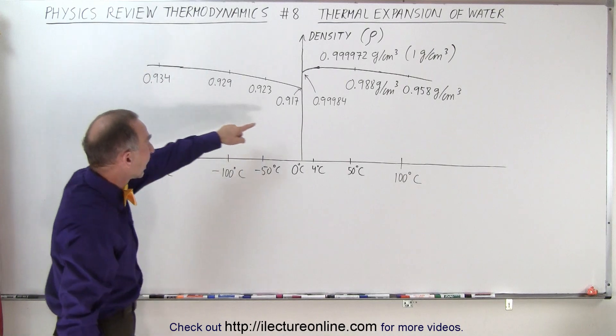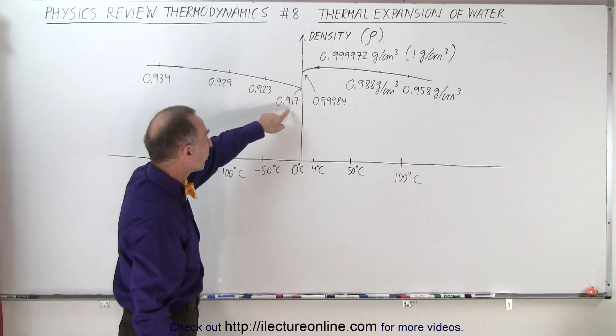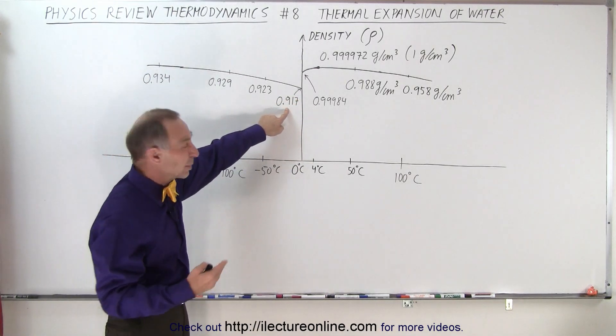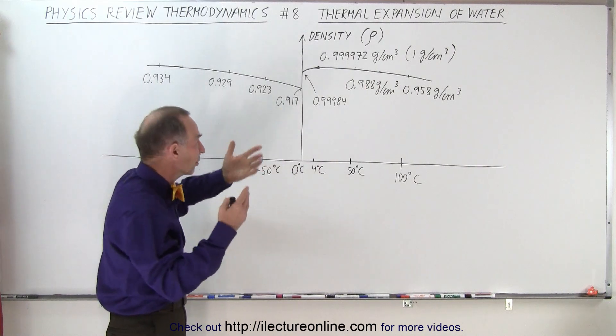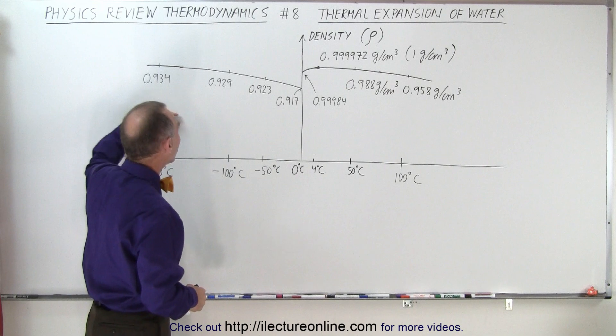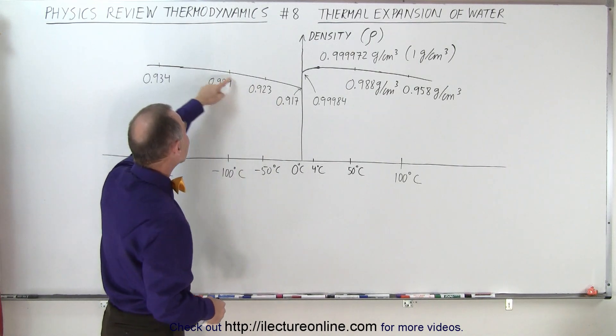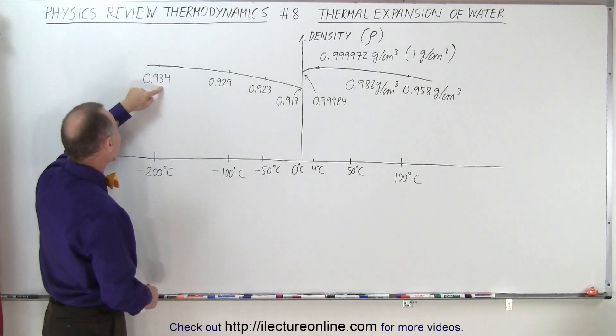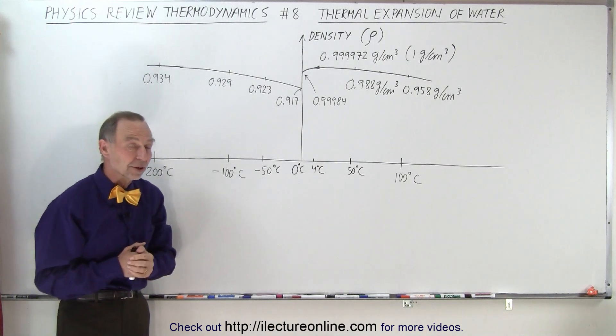Notice that the density of ice at zero degrees Celsius is 0.917. Typically we talk about 0.92, but it's roughly 0.917. But notice that as ice gets colder, the density increases and becomes as much as 0.934 at minus 200 degrees Celsius.